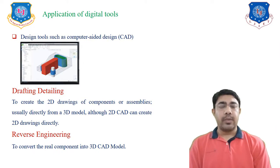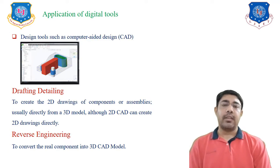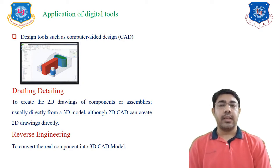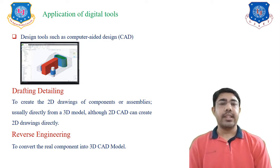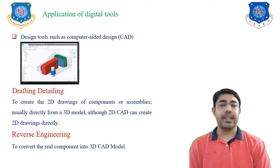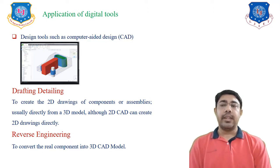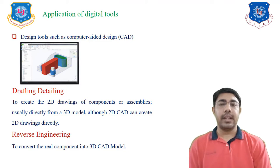The next application of CAD is drafting and detailing. After finalizing the product, we create 2D drawings of that product. In software, 2D drawings can be generated directly from 3D models, or you can create 2D drawings directly in CAD software. The final CAD application is reverse engineering — creating virtual CAD models from physical models — which is useful to convert real components into 3D CAD models for dimension measurement.